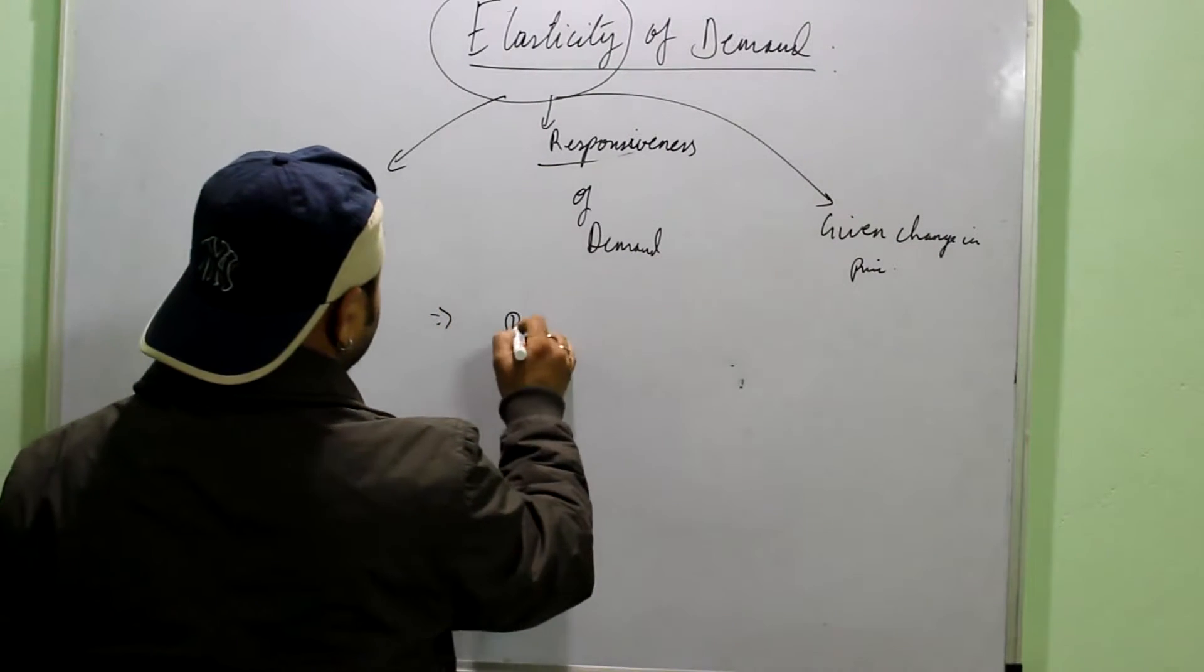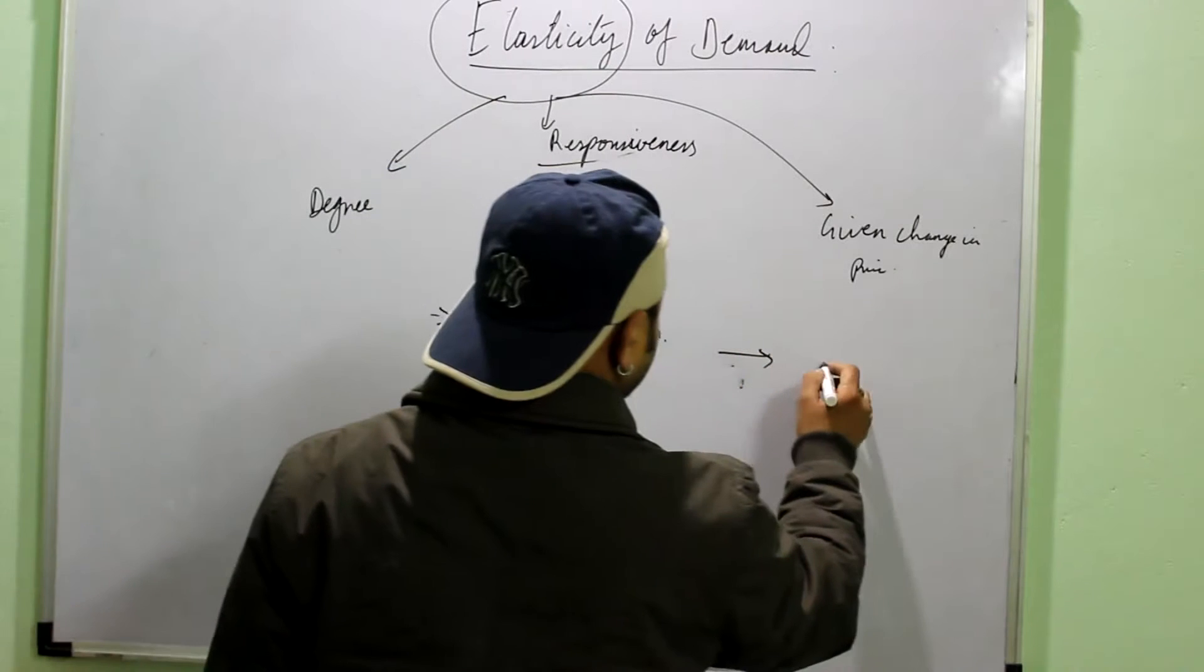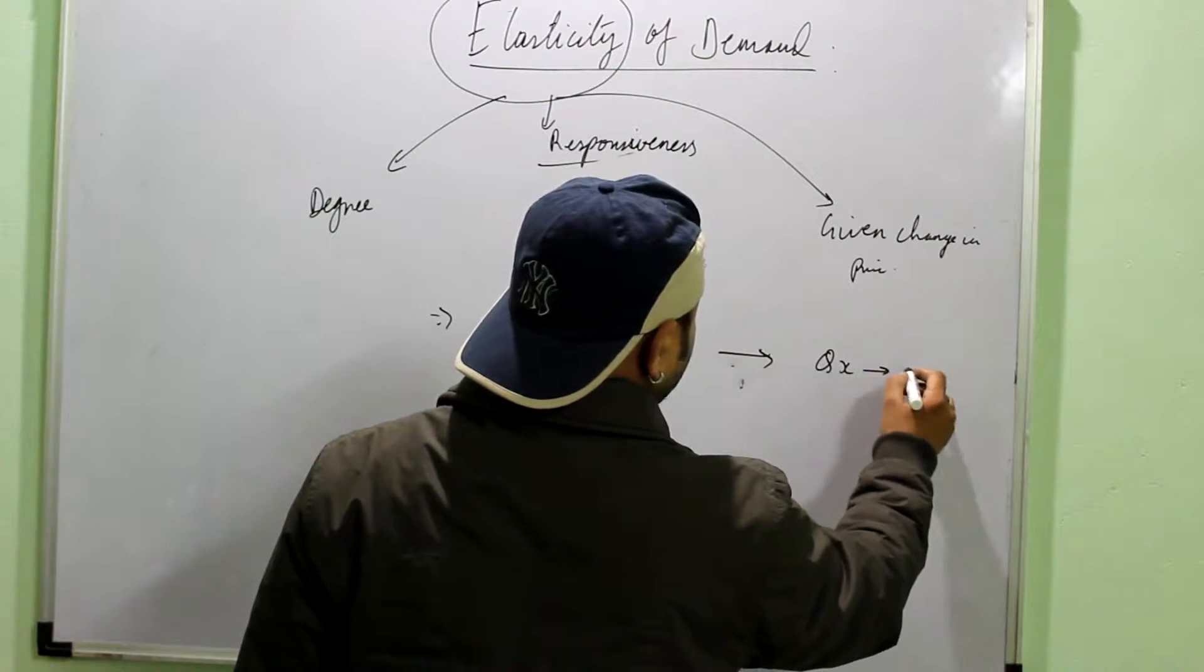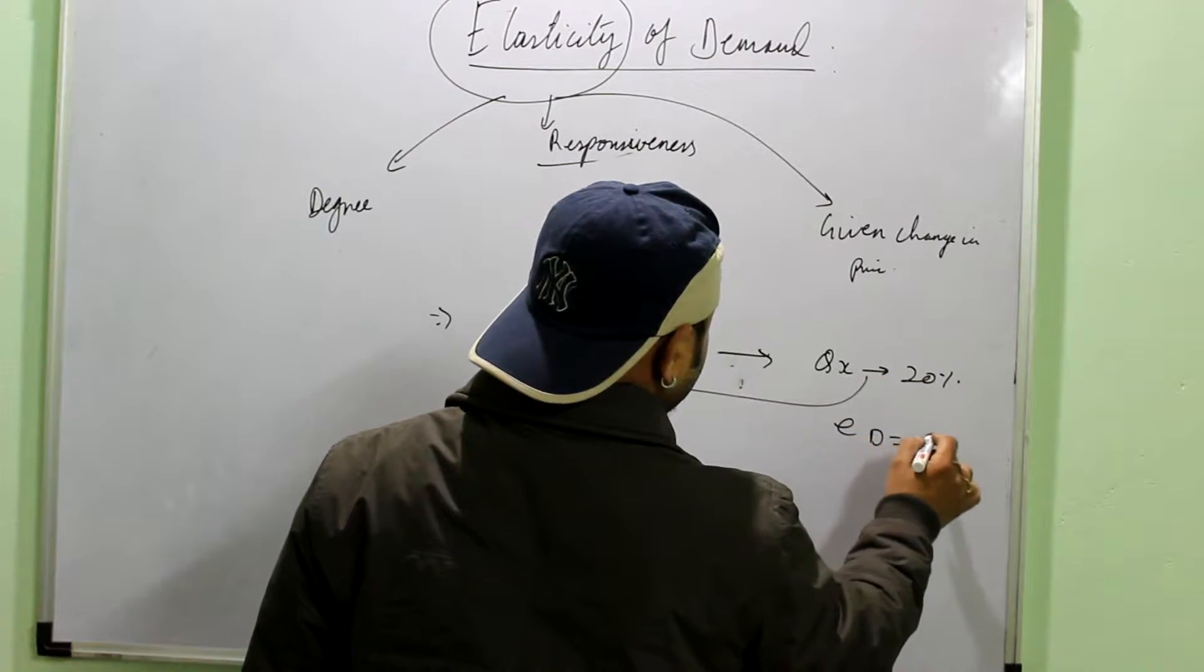Say, if I say that if the price of the quantity changes by 10% or say rises by 10% and the demand falls by 20%. It means simply I am saying that the elasticity of demand is 2.